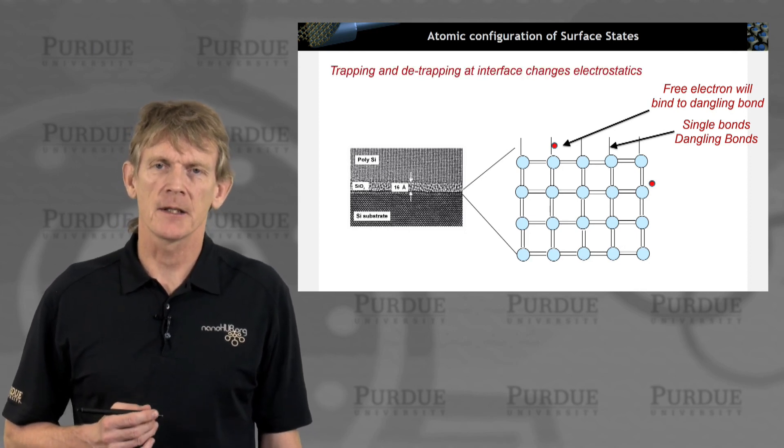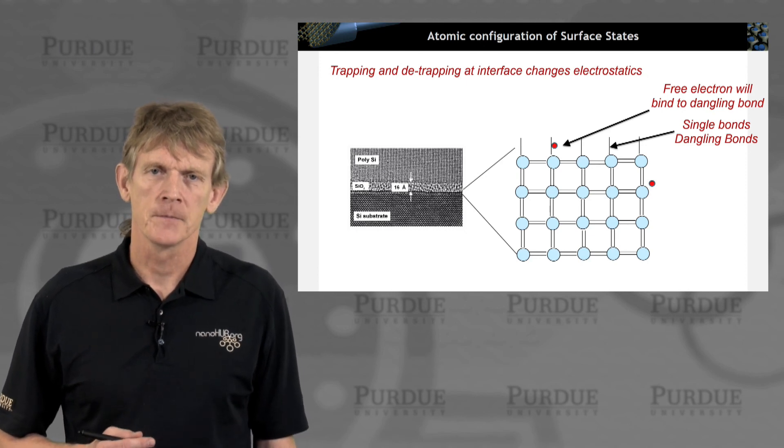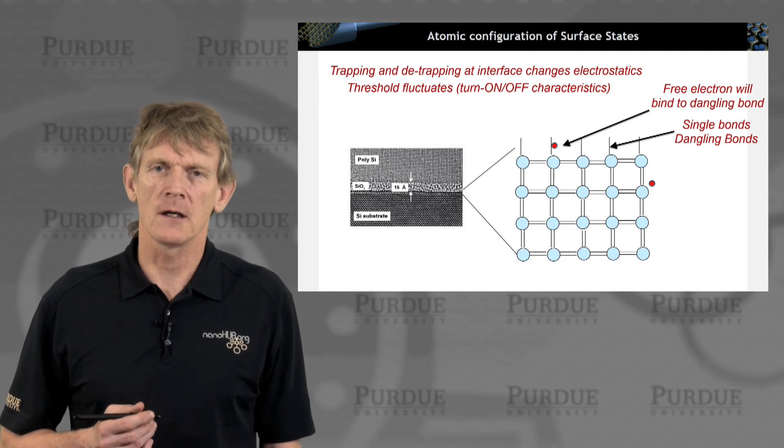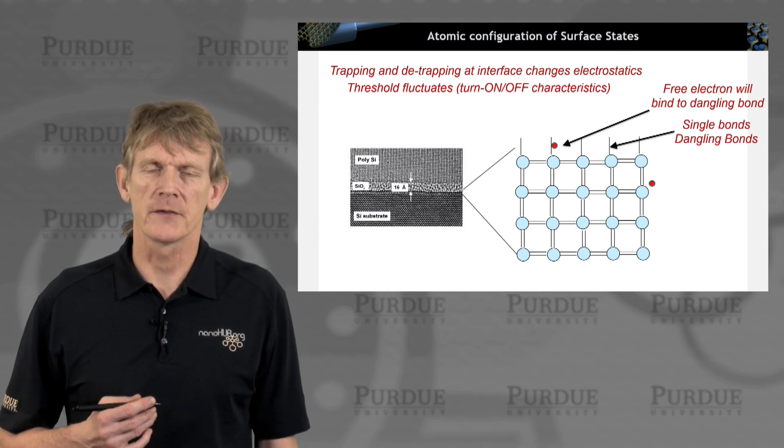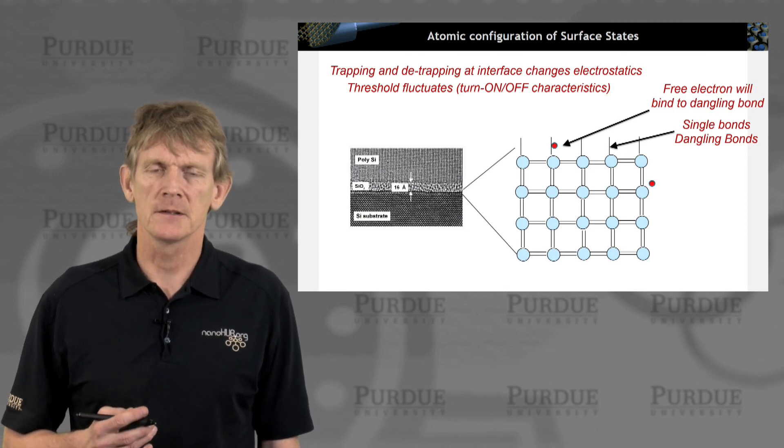This trapping and detrapping at interface changes the electrostatics of the device. That means the turn-on and turn-off characteristics of this device will fluctuate, which will be a bad thing, as it's temporarily dependent.